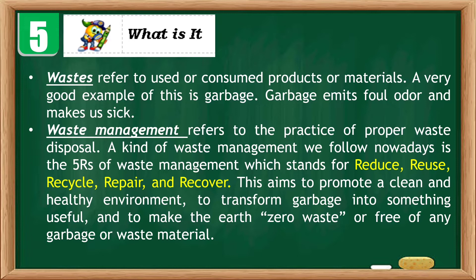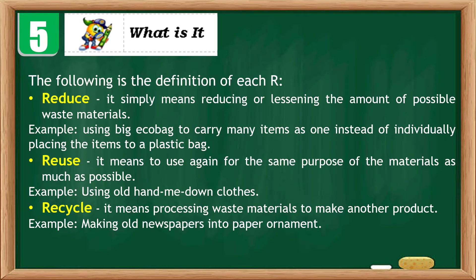The 5Rs aim to promote a clean and healthy environment, to transform garbage into something useful, and to make the earth zero waste — free of any garbage or waste material. The first R is Reduce, which simply means reducing or lessening the amount of possible waste materials. For example, using a big eco-bag to carry many items as one, instead of individually placing items in plastic bags.